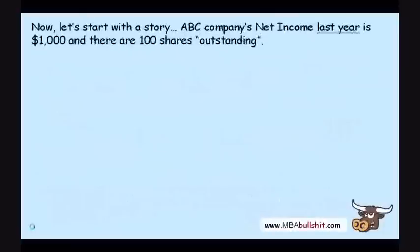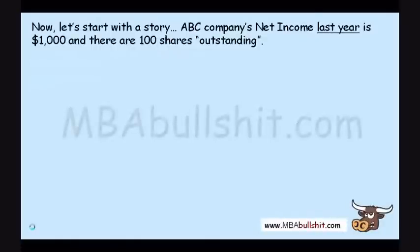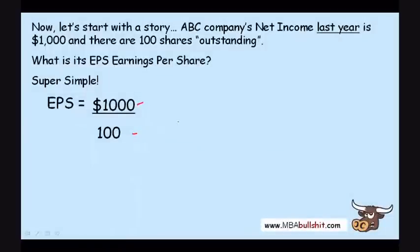Let's start with a story. ABC Company's net income last year is $1,000 and there are 100 shares outstanding. What is its earnings per share? Earnings per share is simply the total net income of the whole company divided by the number of shares outstanding. If you do this equation, you'll find that the earnings per share is exactly $10.